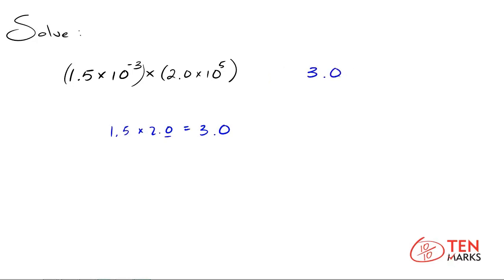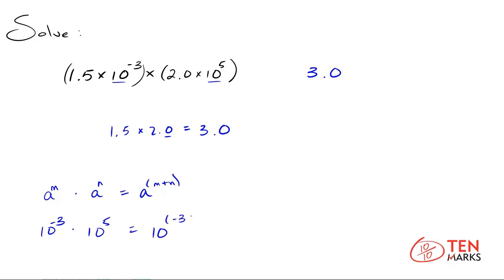Now multiply the powers of 10 using the product of powers property: when two powers have the same base, you add the exponents to find the product. Here the base is 10, with one raised to the negative 3 and one raised to the 5. Applying the product of powers property gives 10 to the (negative 3 plus 5), which is 10 to the 2. So your answer is 3.0 times 10 squared.